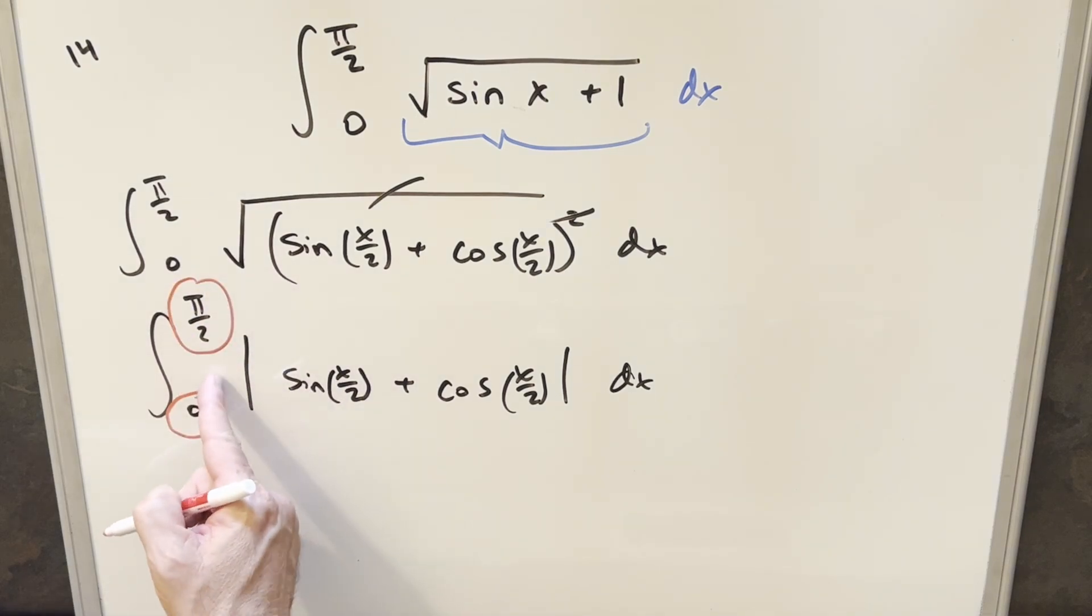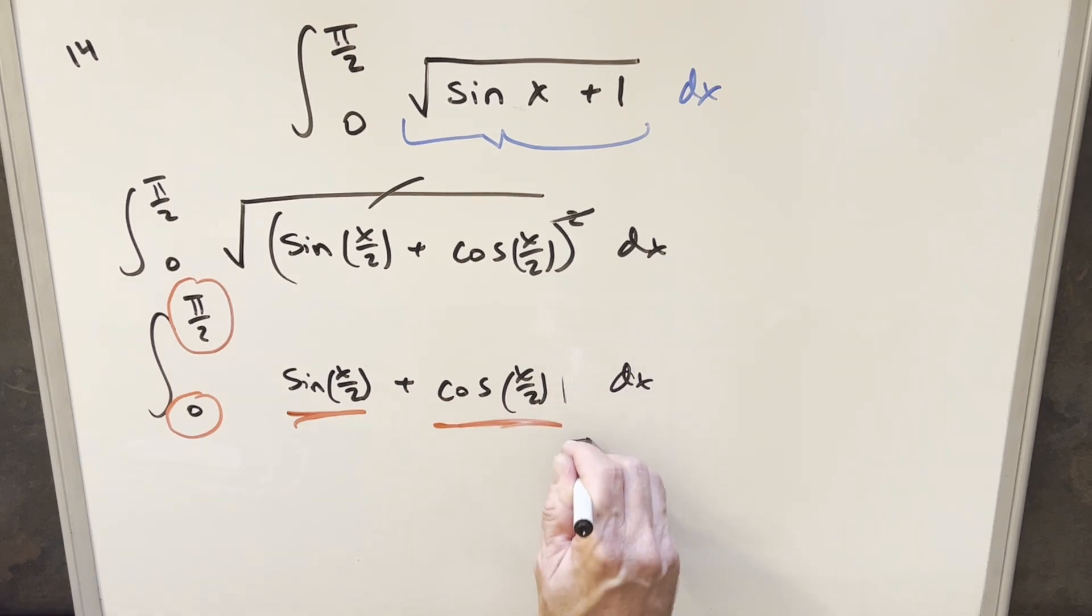We're going from 0 to pi over 2. So everything, our x value is going to be all in the first quadrant. So even when we half it, we're going to still be in the first quadrant, of course. Sine is always going to be positive. Cosine is always going to be positive. The whole thing is always positive. So I'm just going to drop the absolute value.